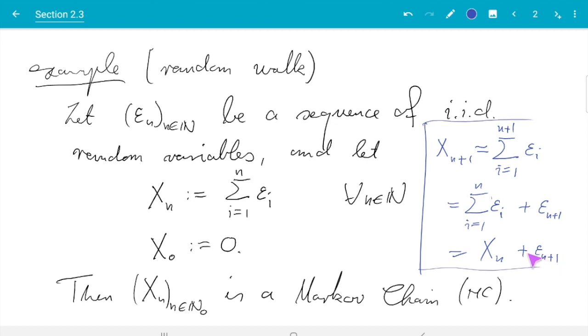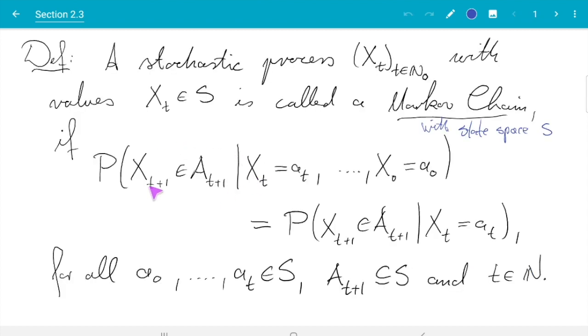From this independence, nothing of the internal structure here affects the distribution. What Xn+1 does if we know Xn is just given by what the distribution of εn+1 is. It is clear from that that X must be a Markov chain because that probability where we condition on knowing the whole past will equal the probability for the next step where we just know Xn. That's one example.